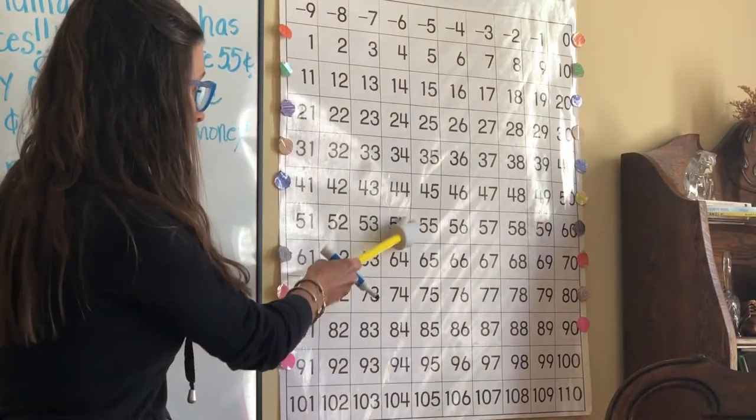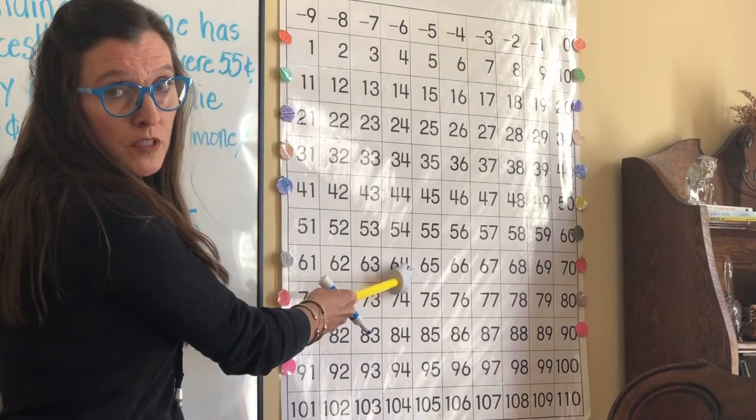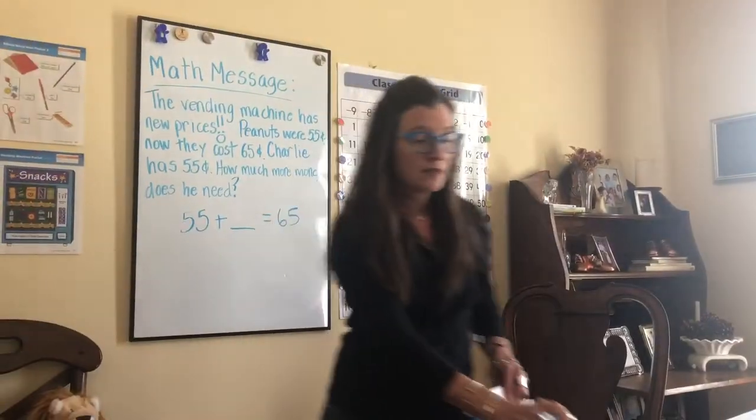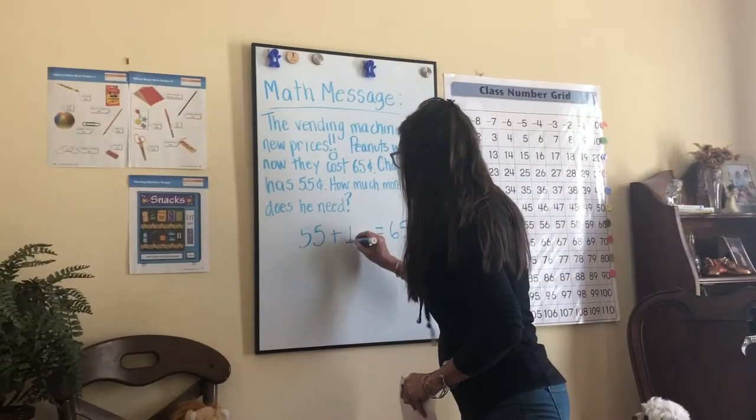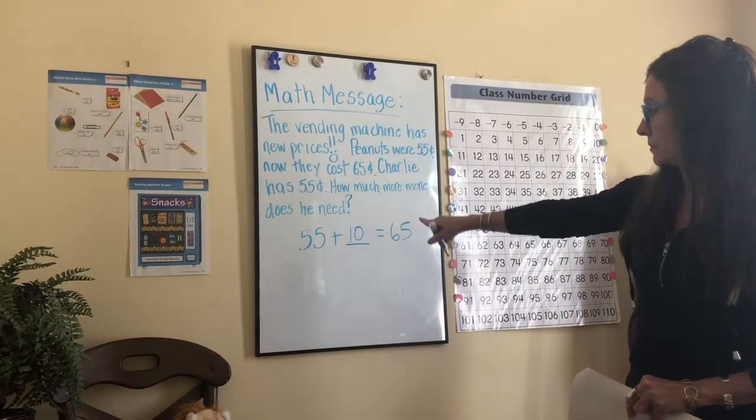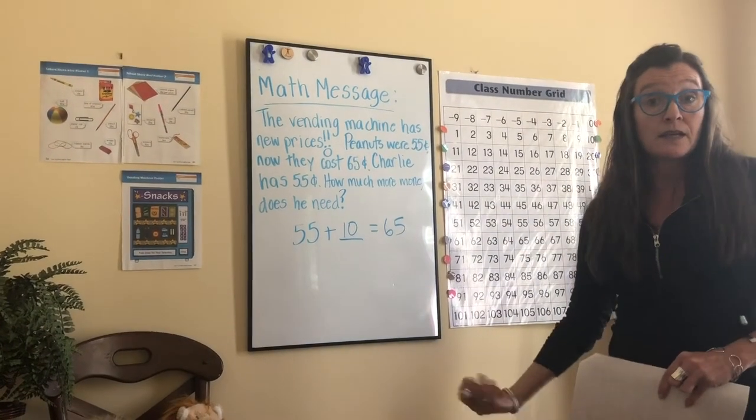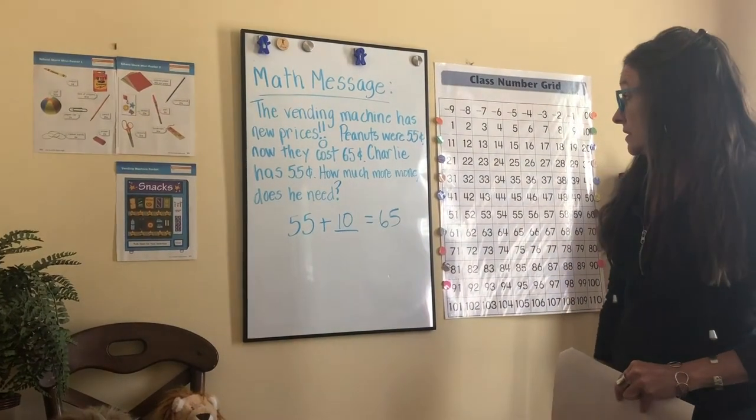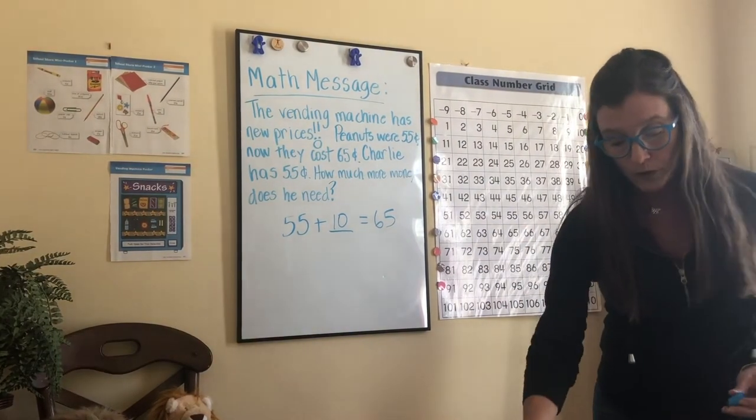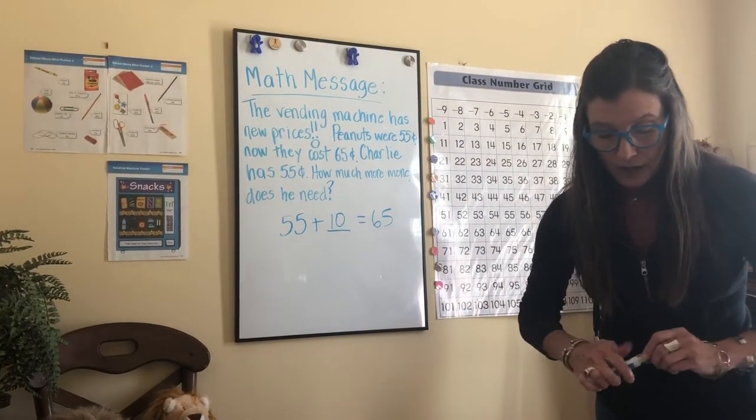We get on 55. We know that cost 65. We could just count by ones, but that's just too much work. Let's just go down one row. We know it's plus 10, 10 more, 65 cents. So we just went down 10 for 10 more. 55 plus 10 is 65 cents, and that's what he's going to need if he now wants some peanuts. All right, let's do one more.